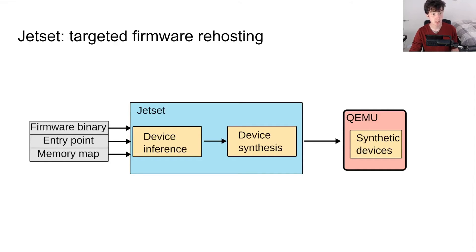To this end, we built JetSet, a tool for targeted firmware re-hosting. JetSet takes as input a firmware binary, the memory map for this binary, and its entry point. In the device inference stage, it uses directed symbolic execution to reach the analyst's point of interest within the firmware. Then, in the device synthesis stage, it takes the constraints inferred during the inference stage and uses them to construct a concrete device model. Finally, this model can be used in an unmodified emulator like QEMU to emulate the firmware for testing.